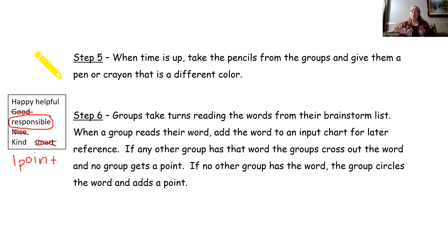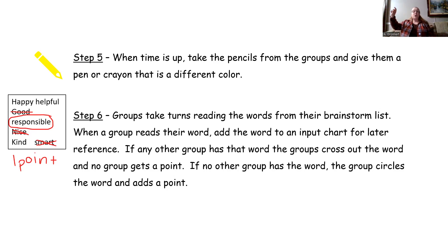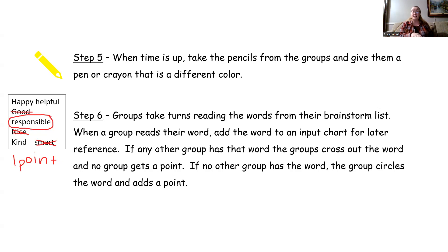Step six: go around to each table group one at a time and have them take turns reading one word off of their brainstorm list. When a group reads their word, you're going to add that word to the input chart. I like to organize my input charts — if we're talking about color, I'll write color, shape, size. I try to categorize the words as I place them on the chart. Then, if any other group has that word, all the groups cross out the word on their paper and they don't get any points. But if no other group has the word, that group gets to circle the word and add a point.